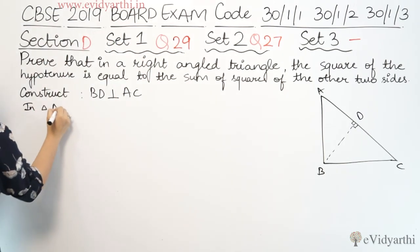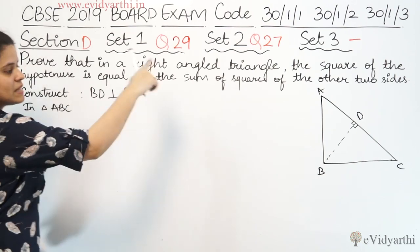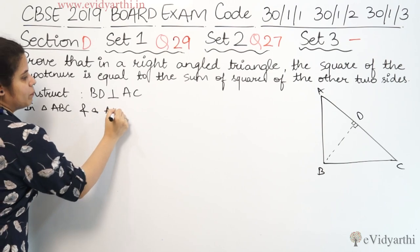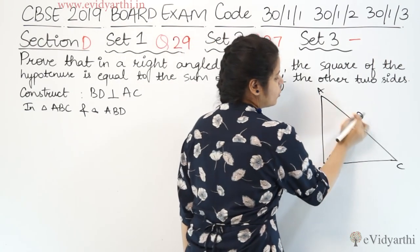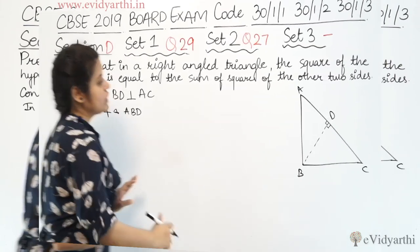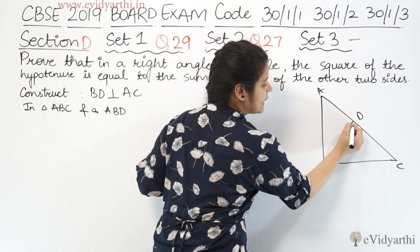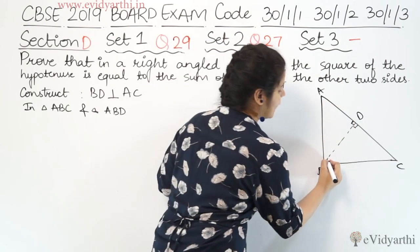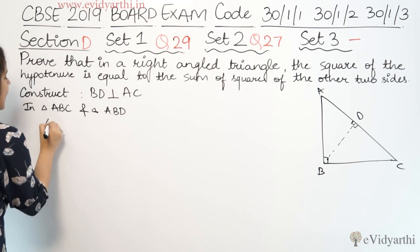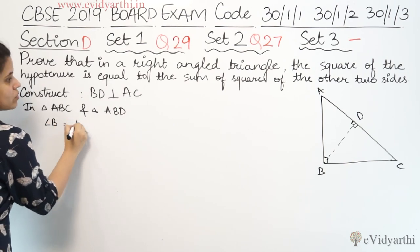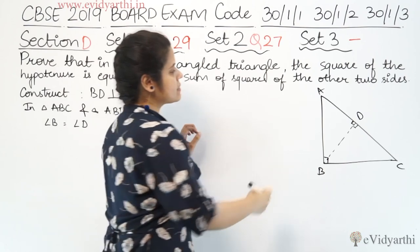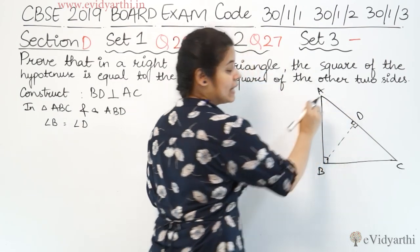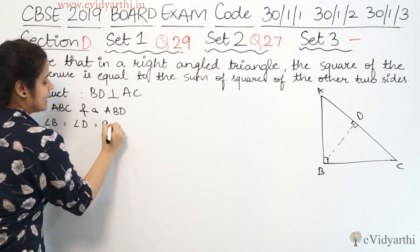In triangle ABC — मतलब जो हमारा पूरा बड़ा वाला right-angle triangle है — and triangle ABD — मतलब यह वाला छोटा वाला triangle — यहाँ पे यह हमारे पास 90 degree है. बड़े वाले में भी right angle है जहाँ B = 90 degree है. So, I can write angle ABC equals to angle BDA, दोनों 90 degree हैं.